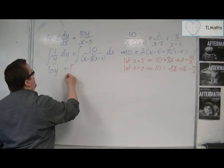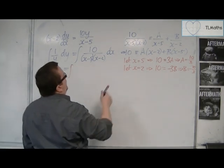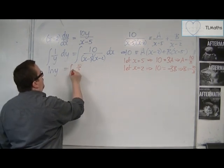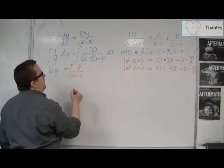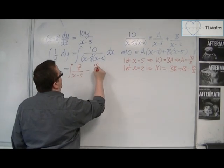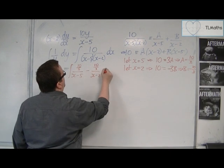This is equal to the integral of a over x minus 5. So, 10 thirds over x minus 5 plus b over x minus 2. So, take away 10 thirds over x minus 2 dx.